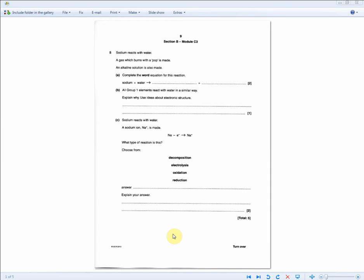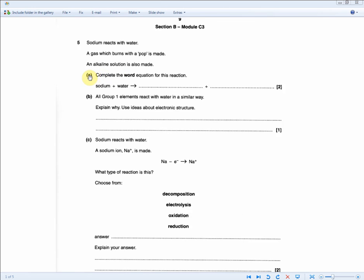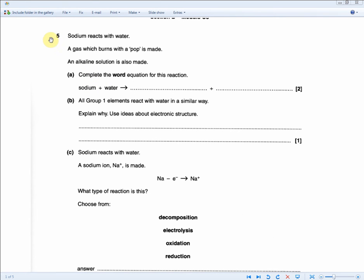The next exam question is pretty much the same question that we just did, but reworded differently. If we zoom in, you'll see what I mean. The question reads, sodium reacts with water. A gas which burns with a pop is made. An alkaline solution is also made. Complete the word equation for this reaction. We're told that sodium plus water equals blank space plus blank space.